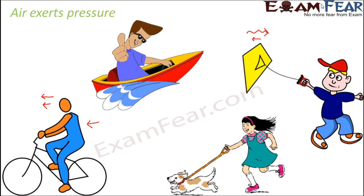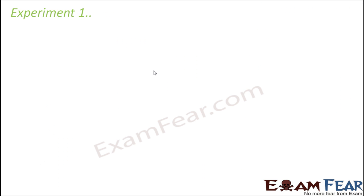The same holds true when sailing a boat — if you sail in the direction of the wind it helps, but in the opposite direction it becomes difficult. Whenever you move along the direction of the wind you need to put less effort, because the air is also putting in some pressure — on you, on the boat, on your kite, or on the bicycle. From all these examples, you can see that air can indeed exert pressure.